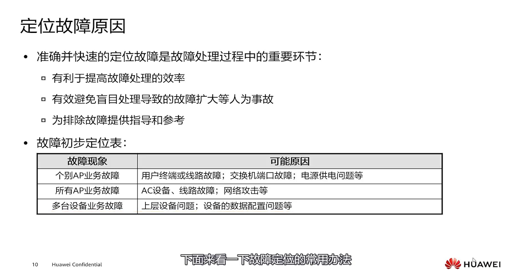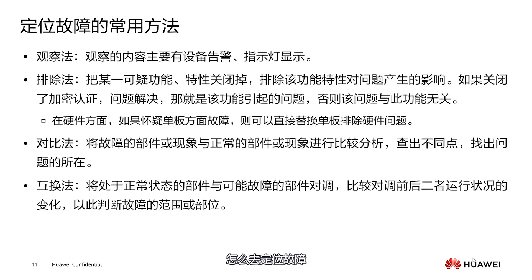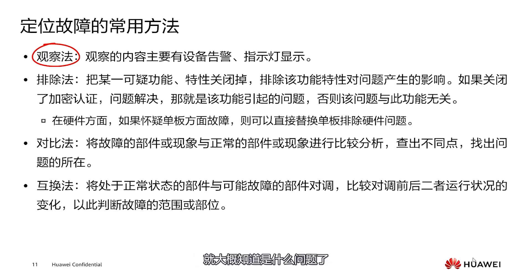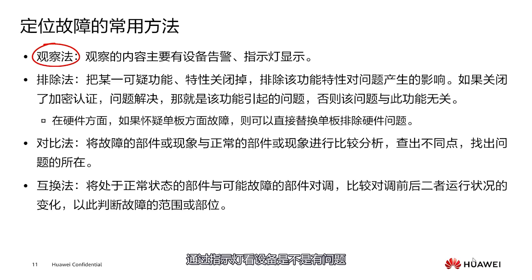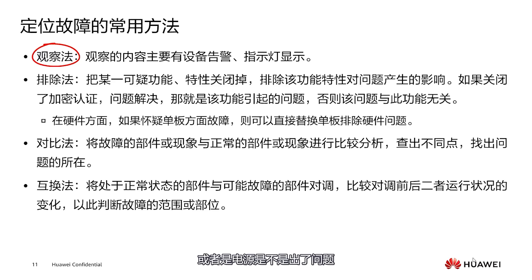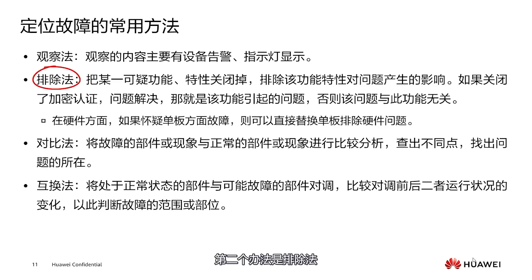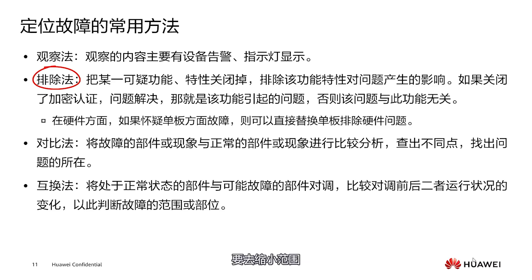Let's examine the common methods of troubleshooting faults. These faults can be identified with some relatively simple methods. The first method is observation, which is the simplest — observe the color of the lights on the device. Seasoned maintenance personnel can roughly identify the problem by looking at the fault indicator light. There are various colored lights on the devices, such as orange and yellow lights; typically there is a green light on the APs. On the AC, you can look at the fault warning lights or fans. The second method is the process of elimination, which can be used to determine if a particular function has an issue and to narrow down a large-area fault by ruling out non-issues.